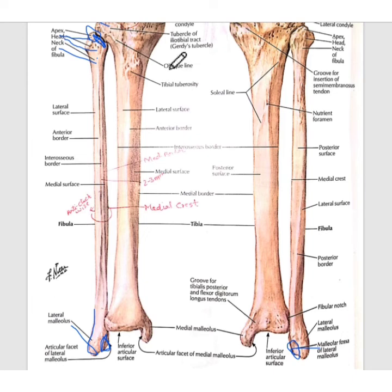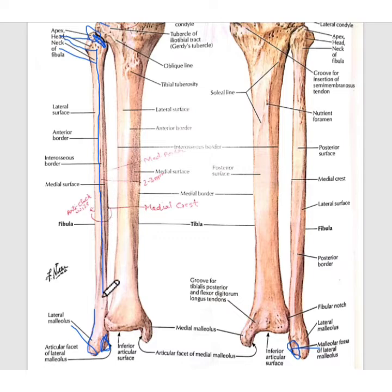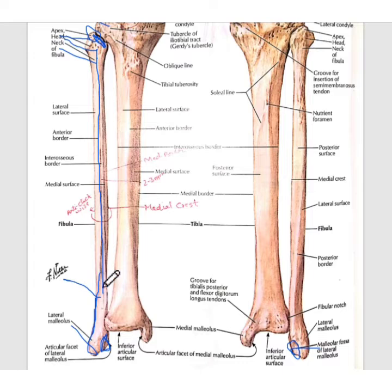Now its shaft — the shaft consists of three borders and three surfaces. Its anterior border starts just behind the anterior aspect of the head, then moves downward, and at its lower end it diverges into two parts to enclose a triangular area. Its lower lip is continuous with the lateral malleolus, enclosing that triangular area.